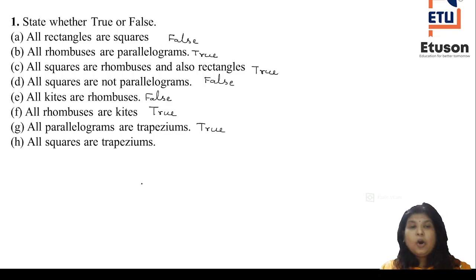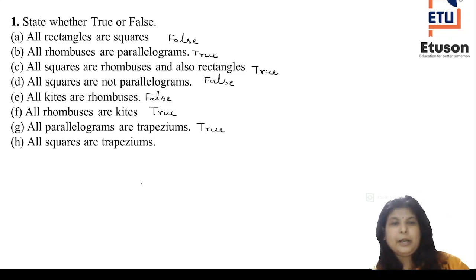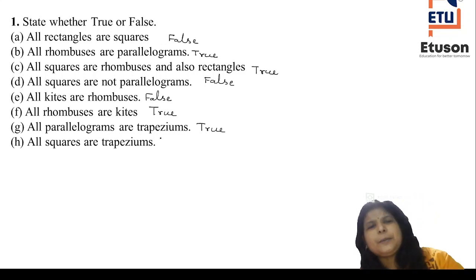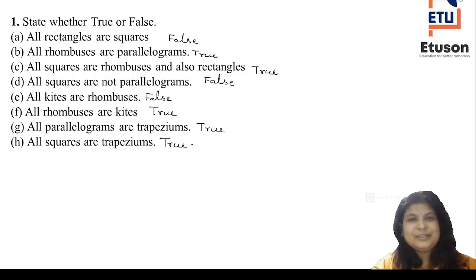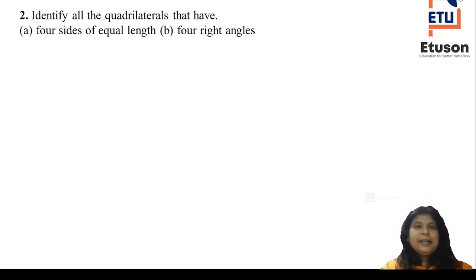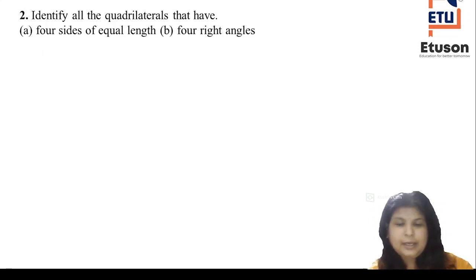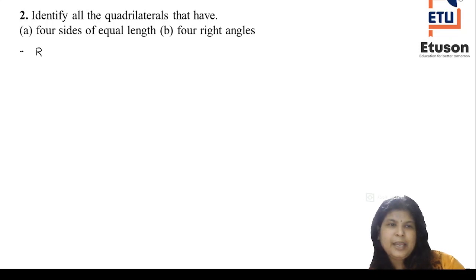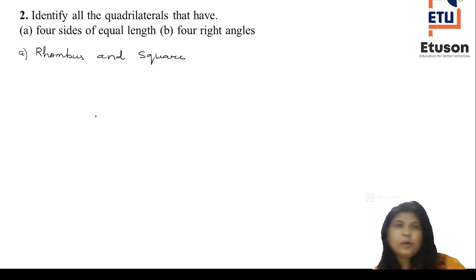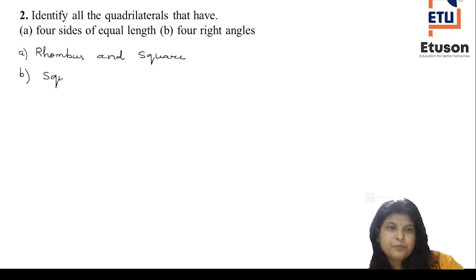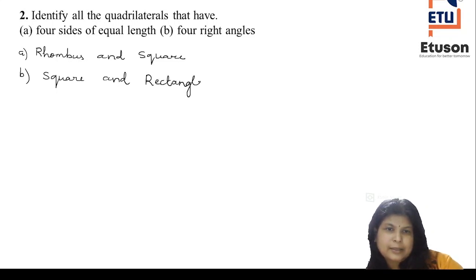The last bit: all squares are trapezeums. Since all parallelograms are trapezeums and all squares are parallelograms, all squares are also trapezeums — true. So we have completed Question 1. Now, Question 2: identify all quadrilaterals that have four sides of equal length. They are rhombus and square. Bit B: four right angles — you will get four right angles in the case of square and rectangle, where all four angles are equal and each is a right angle.